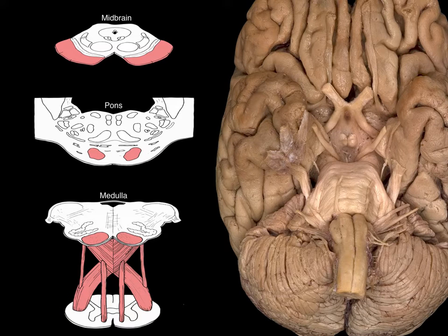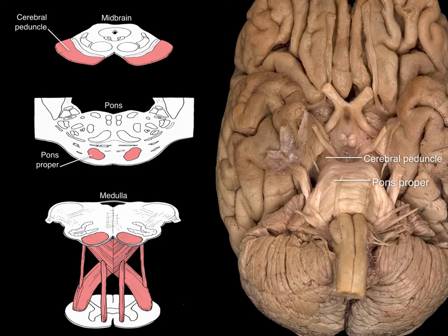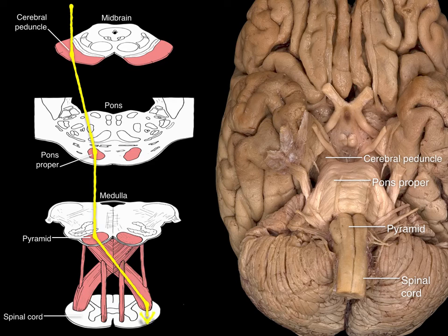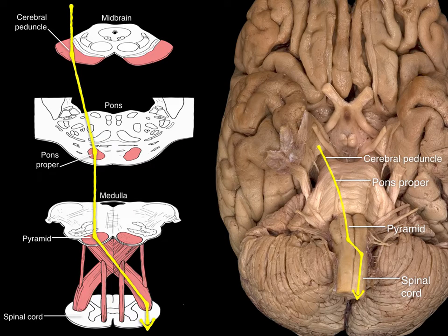Here we have a picture of the base of the brain showing the cerebral peduncle in the midbrain, the pons proper, the pyramids, and the spinal cord. Watch what happens as the upper motor neuron descends and decussates at the pyramid to the contralateral spinal cord. The upper motor neuron goes from the cerebral peduncle into the pons proper, through the pyramids, and decussates to the contralateral spinal cord.